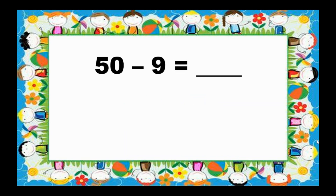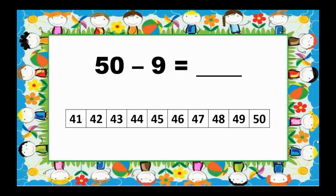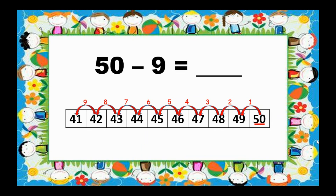Next, 50 minus 9. Let's start from 50 and count back 9 times. 50, 49, 48, 47, 46, 45, 44, 43, 42, 41. So, 50 minus 9 equals 41.